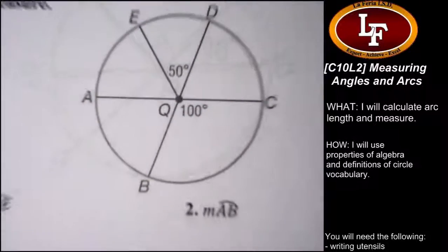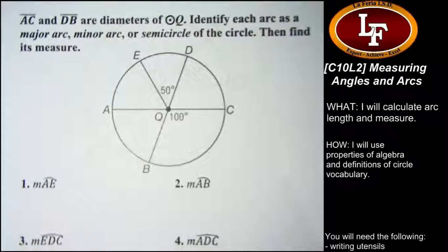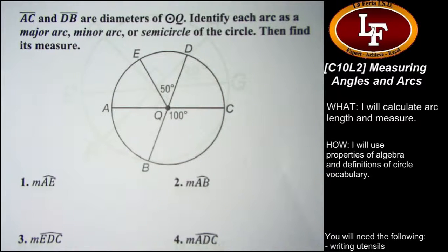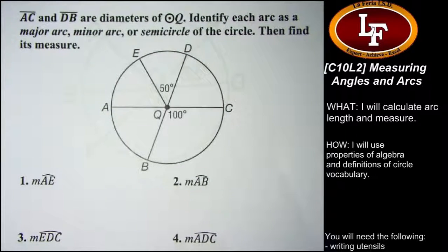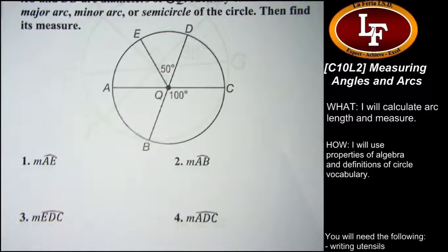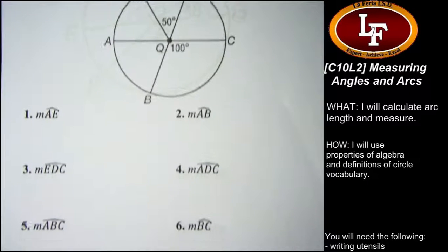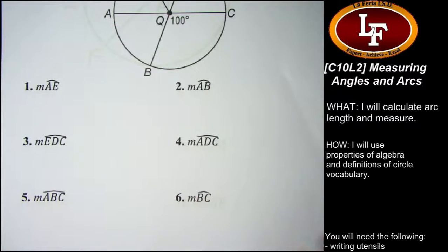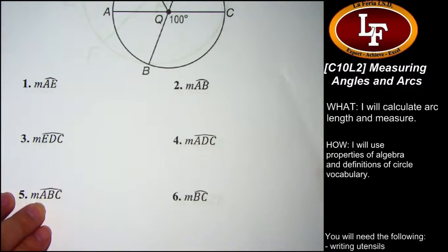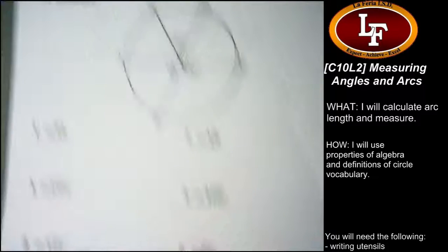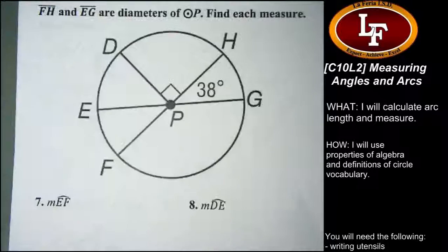This assumes you've already found the measures of all those angles. We've already talked about how you figure out major arc or minor arc, so you shouldn't have too much trouble identifying these arcs and then using the measures of their central angles to find the measure of each arc. Let's move on to the next section.